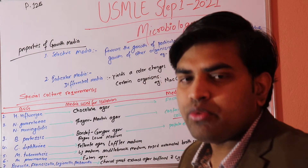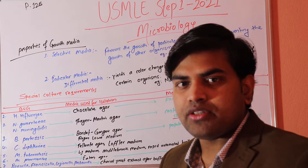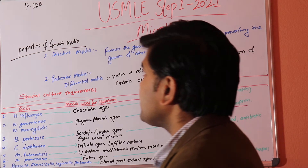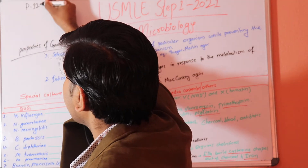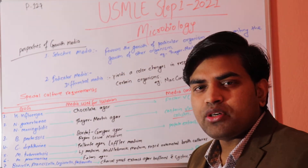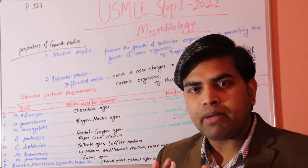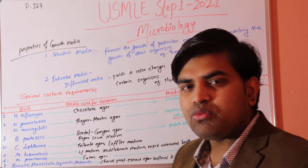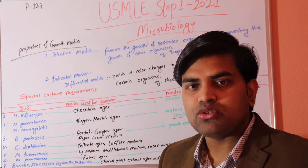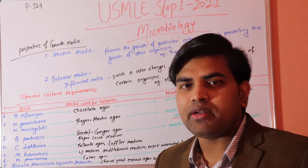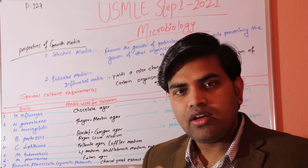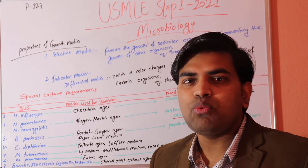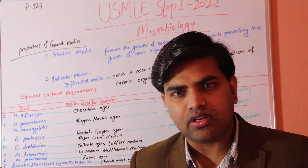Hello everyone, today we will be continuing our previous lecture on USMLE Step 1 2021, page 127. We have talked about bacterial structure, and how it differs from human cells so we can target particular parts to make drugs to kill bacteria. We also discussed how cellular structures help bacteria cause infection and how we can target them.